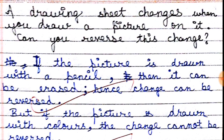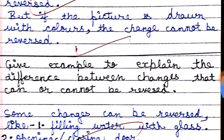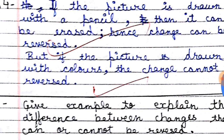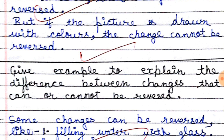Next question: a drawing sheet changes when you draw a picture on it. Can you reverse this change? There will be two answers. If the picture is drawn with a pencil, then it can be erased, so this kind of change can be reversed. But if the picture is drawn with pens or colors, then the change cannot be reversed. So if drawn with pencil it is reversible, but if drawn with pen or colors, the change cannot be reversed.